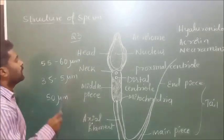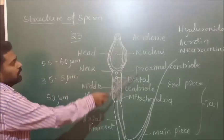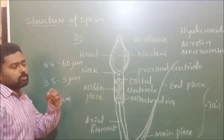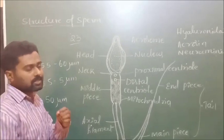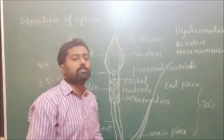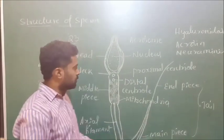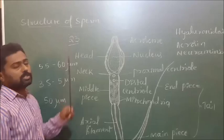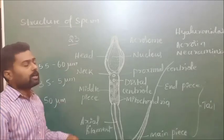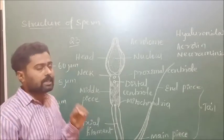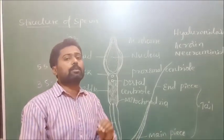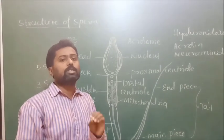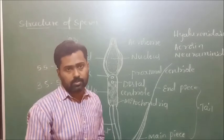This is about the ultrastructure of the human sperm. A major question asked in examinations is to explain the structure of the human sperm, or to draw a neat labelled diagram of the human sperm, for about 3 or 5 marks.